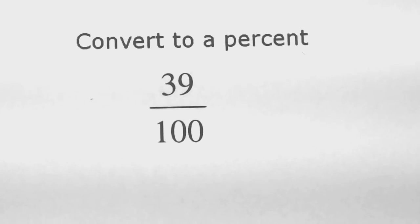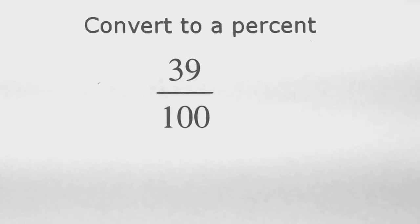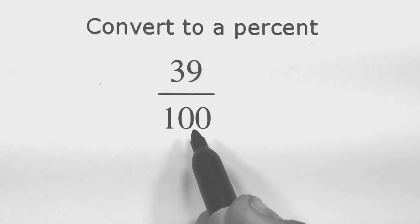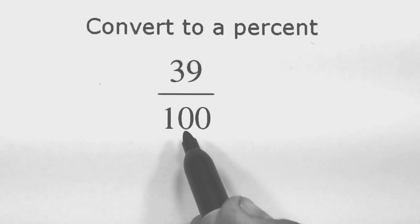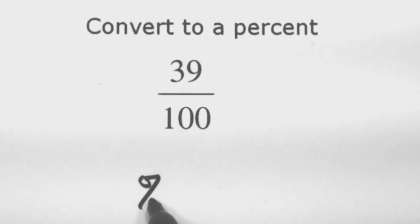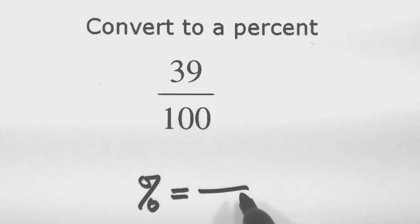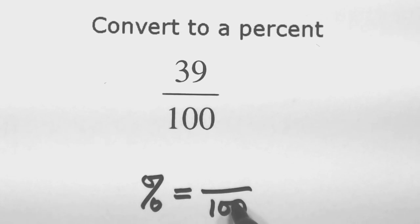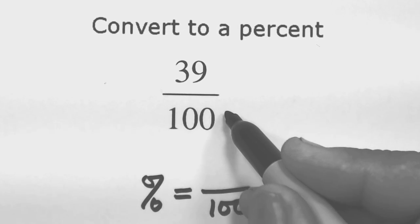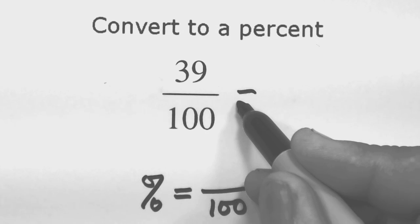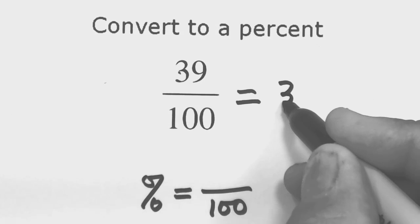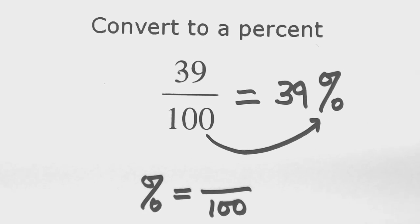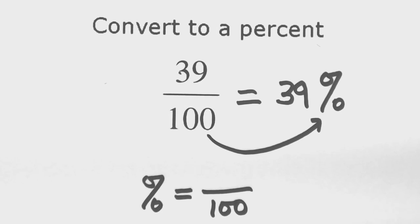Now let's start converting fractions to percents. If you're lucky enough to have a hundred in the denominator, use our favorite conversion directly. Remember: over a hundred trades in for the percent sign. So for thirty-nine over one hundred, just write thirty-nine and trade the over-one-hundred for the percent sign — giving thirty-nine percent directly.